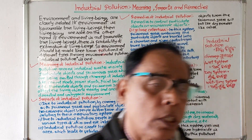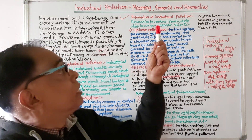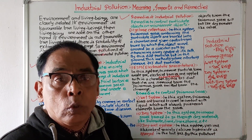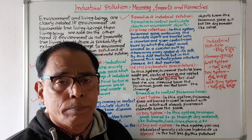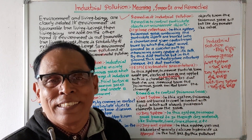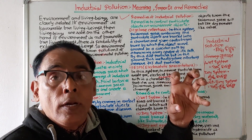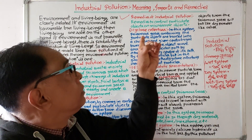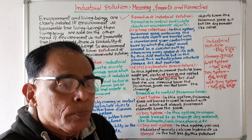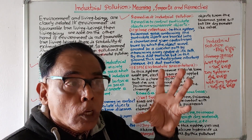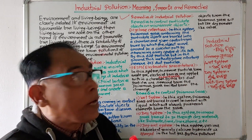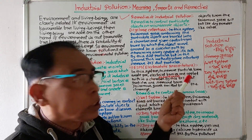Now we will see the remedies of industrial pollution — how industrial pollution can be checked. Industrial pollution mainly involves two types of waste: particulate or microscopic objects, and poisonous gases. To control particulate objects, two methods are used: cyclone collectors, and ESPs — electrostatic precipitators.